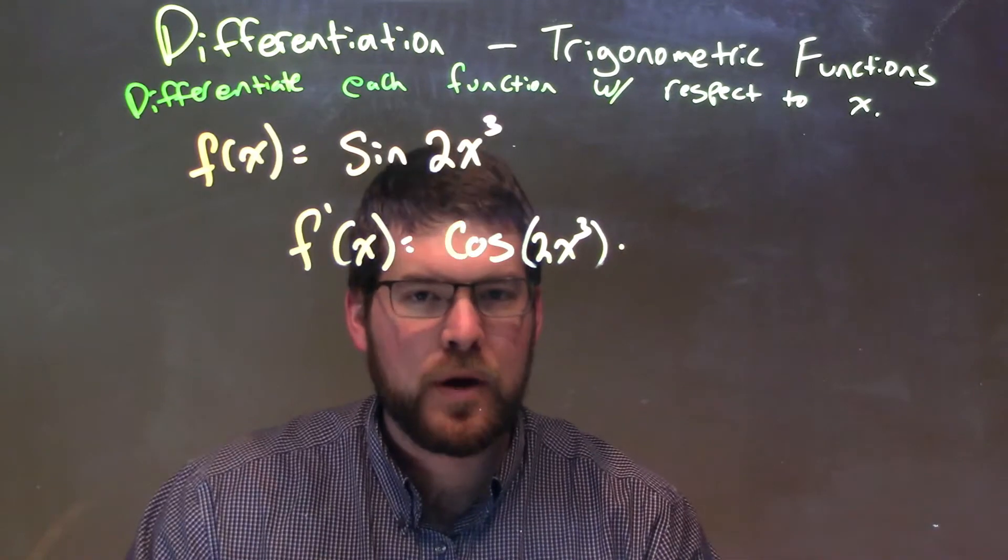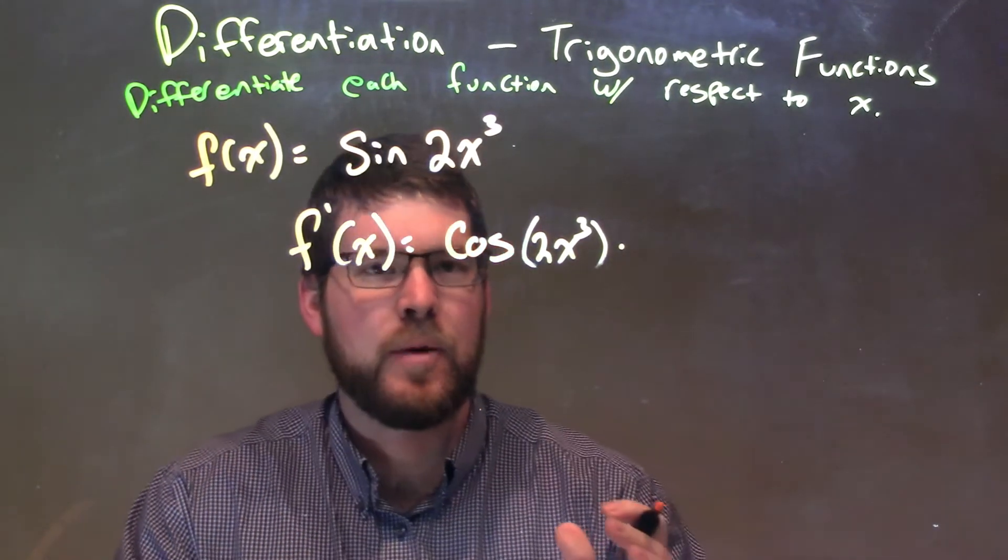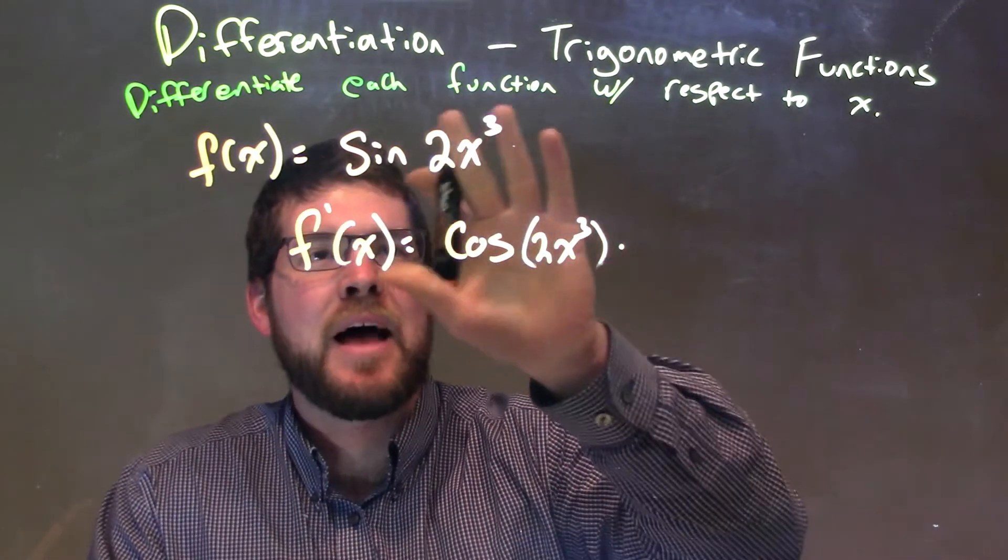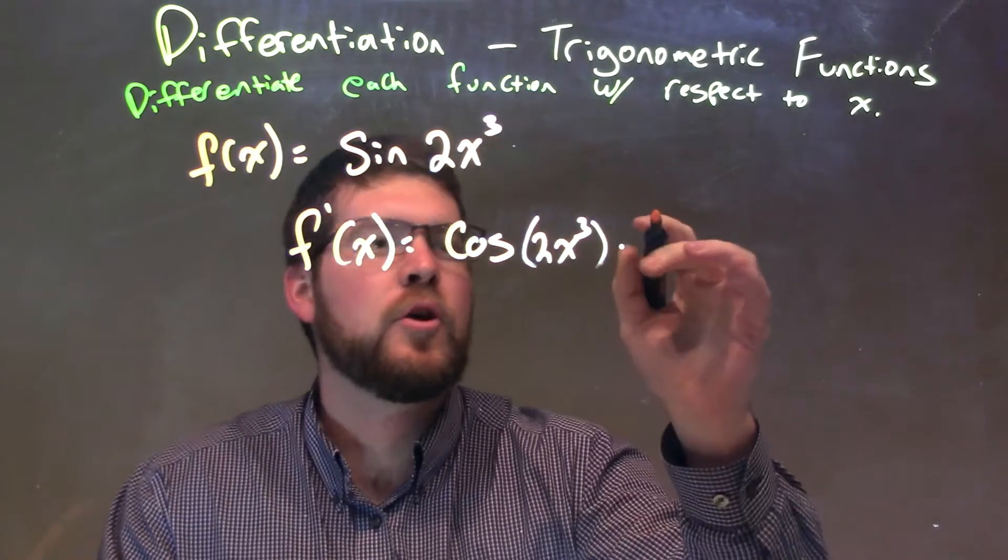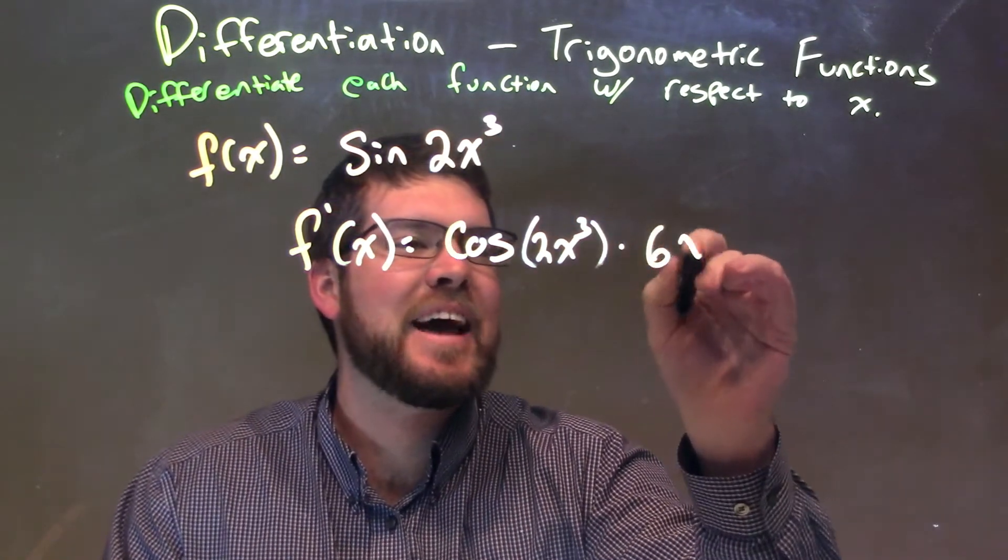But then we need to multiply that. We're going to apply the chain rule here. We're going to apply that by taking now the derivative of 2x to the third. Put the power rule there, 2x to the third becomes a 6x squared.